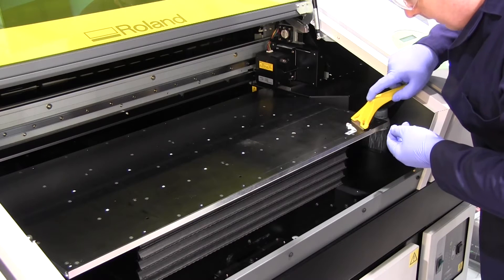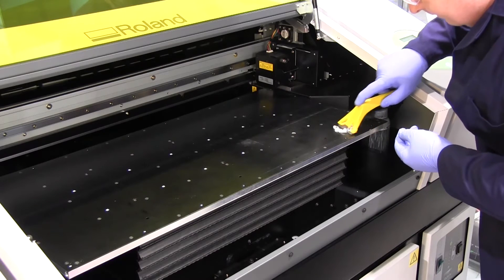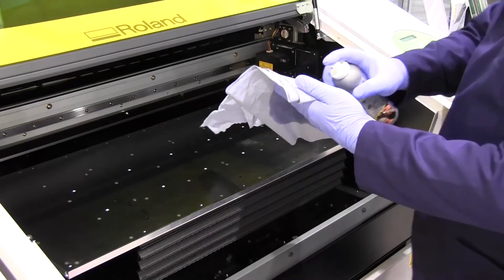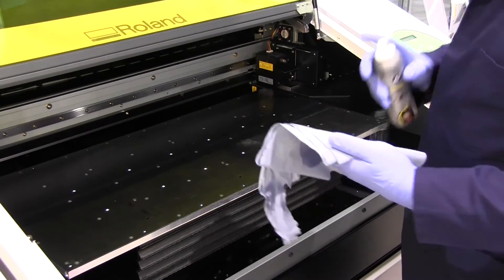Here you can see we are using a scraper to remove any print or ink on the table. Then we are going to use some isopropanol to clean the surface.